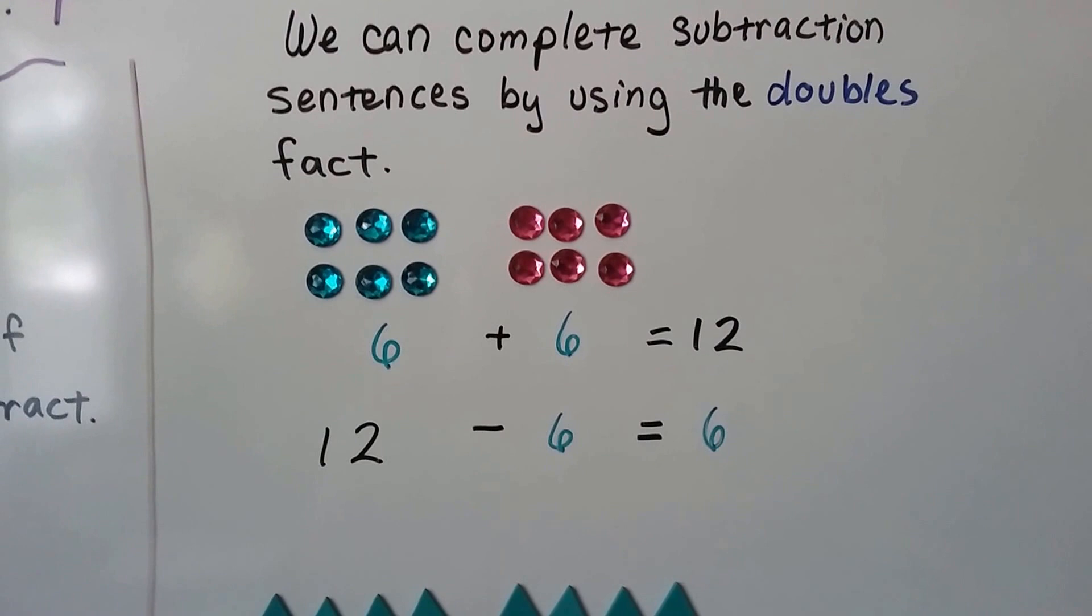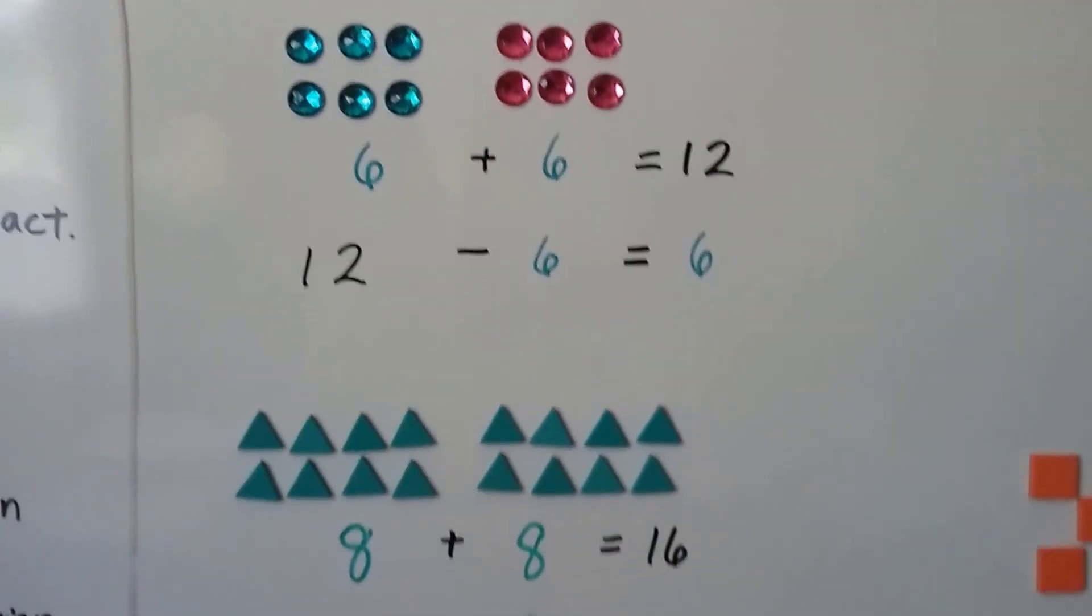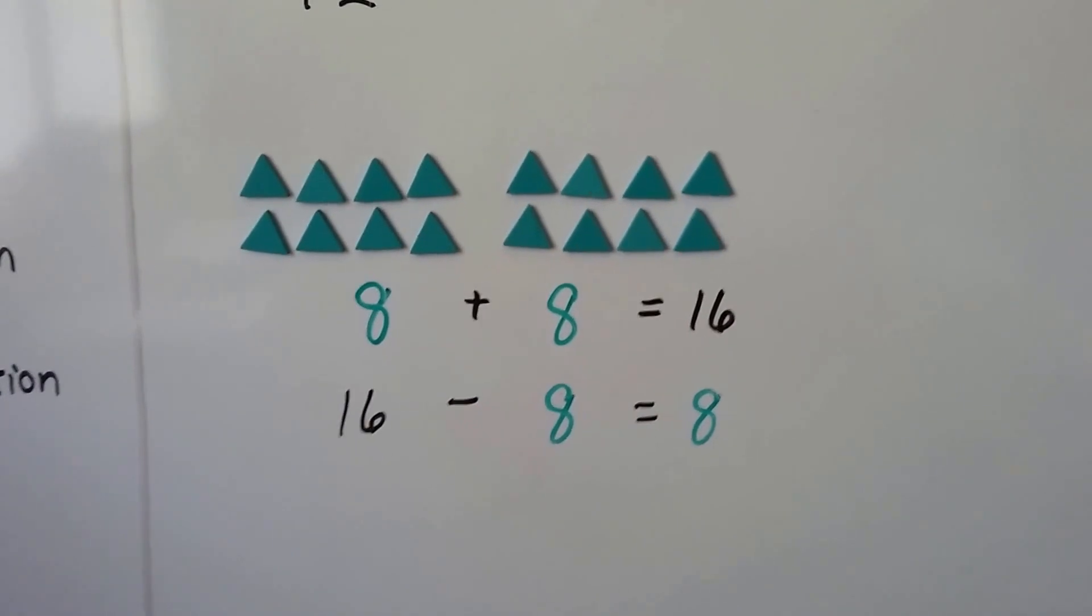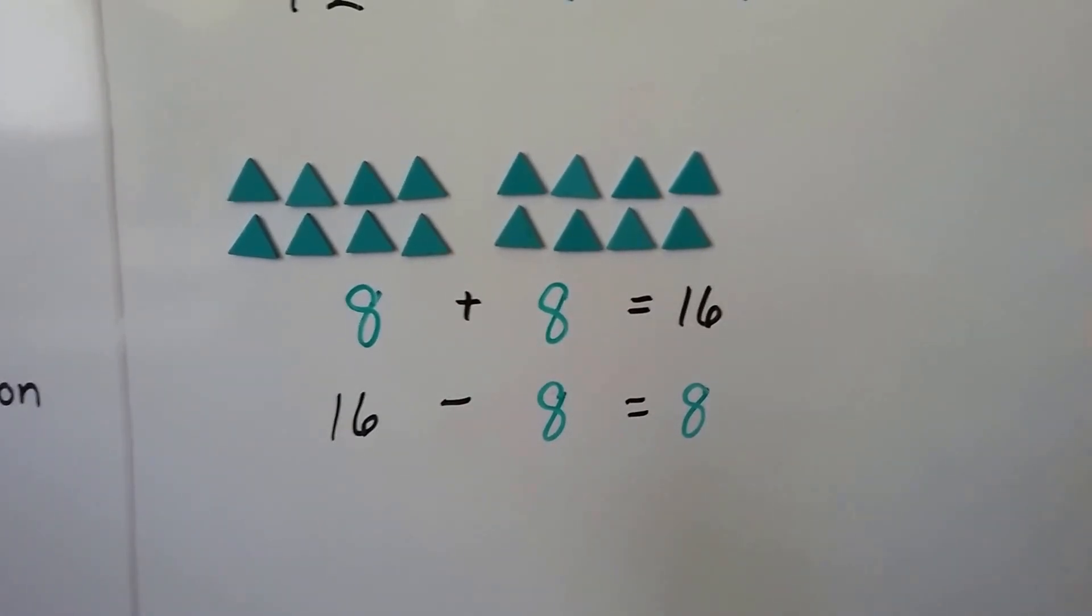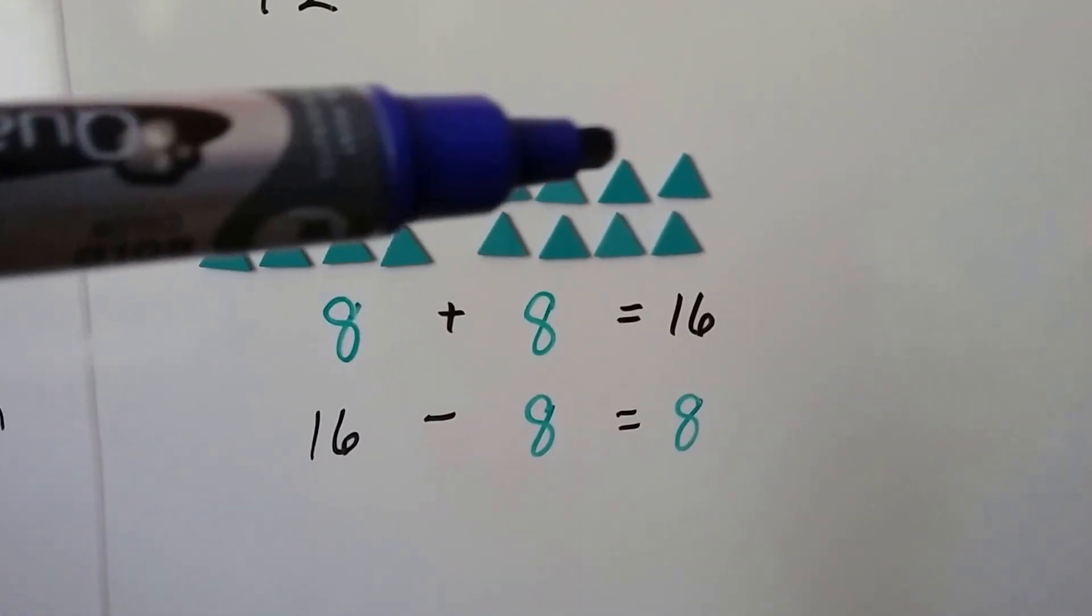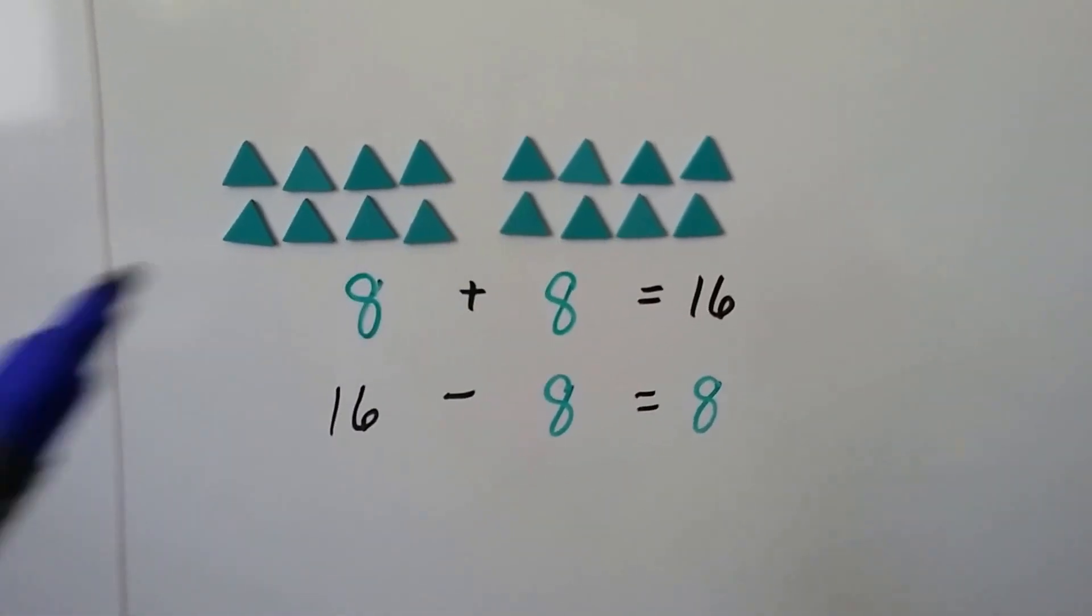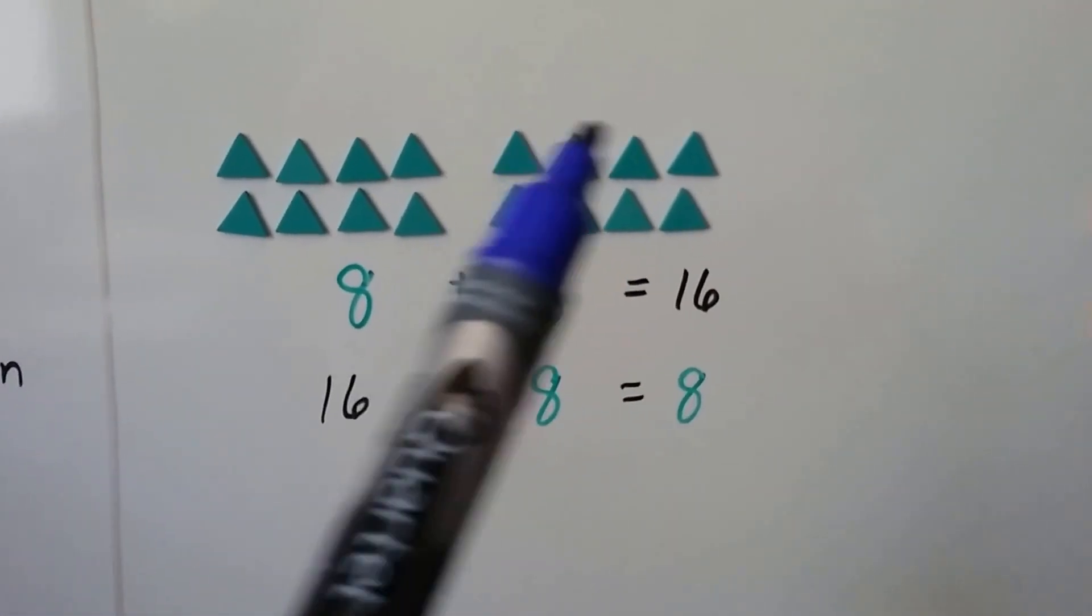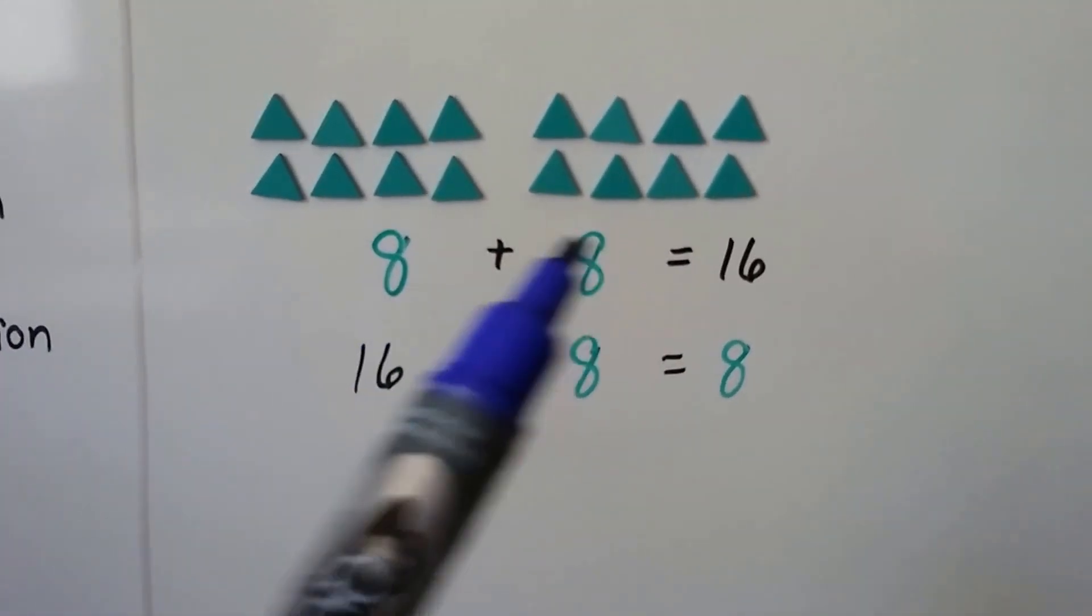See the doubles. 8 green triangles plus 8 green triangles equals 16. 8, 9, 10, 11, 12, 13, 14, 15, 16. 16 green triangles minus 8 triangles equals 8. See the doubles.